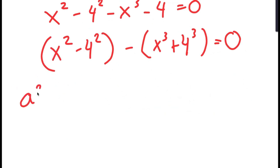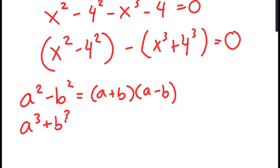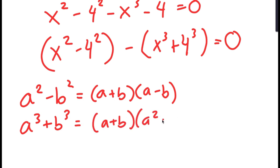If I have something in the form of a squared minus b squared, this is equal to a plus b times a minus b. And if I have something in the form a to the power of 3 plus b to the power of 3, this is equal to a plus b times a squared minus ab plus b squared.